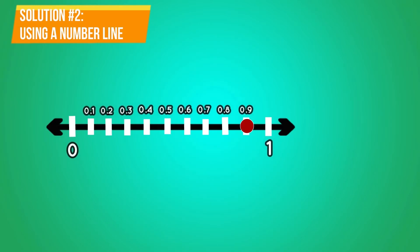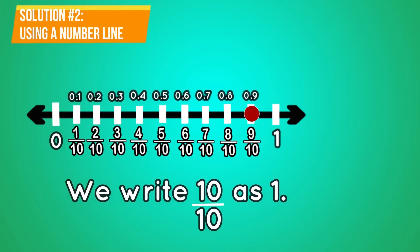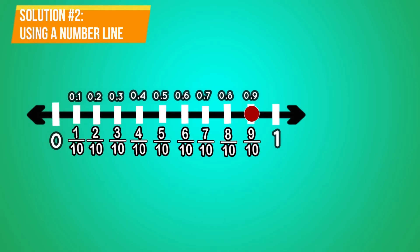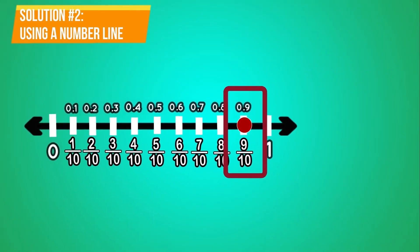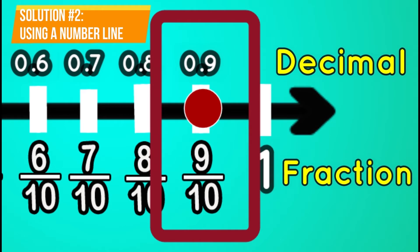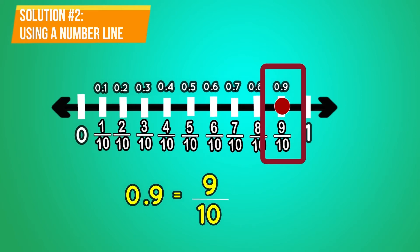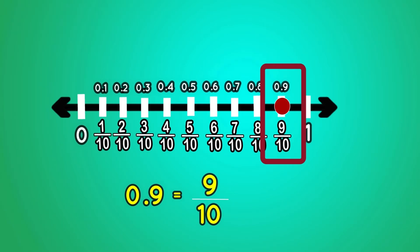The number line is divided into 10 equal parts, which means the denominator is 10. Each part of this number line is 1 tenth. Label the fraction marks 1 tenths through 10 tenths; we write 10 tenths as 1. In the number line, you will see that the fraction form of 0.9 is 9 over 10. Thus, 9 tenths in decimal form is equal to 9 tenths in fraction form.